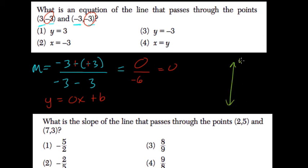You can always picture this line here on the y-axis. They give you these points, (3, -3), so you get this point here, and (-3, -3) here.